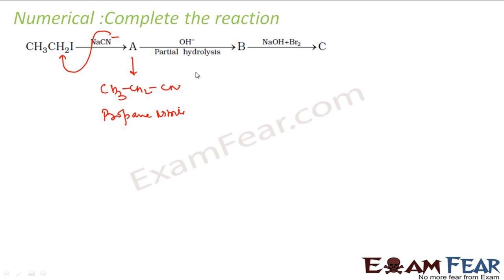Now if you do a partial hydrolysis, what will happen is CN will be converted to CONH2 for partial hydrolysis. This is what you will get. CH3CH2CONH2. That will be propanamide.